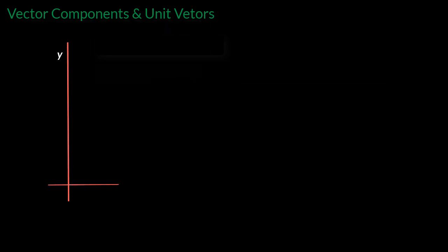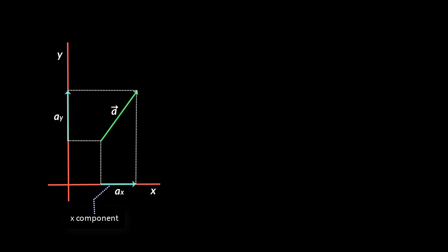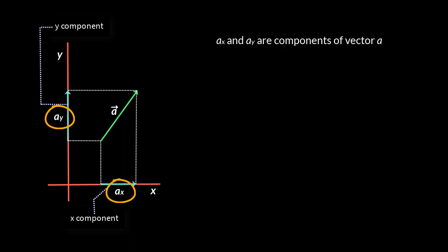When you put a vector in the coordinate system, we can say that the vector has two components. One is the shadow of the vector on the x-axis, and the other is its shadow on the y-axis. In more technical terms, the projection of the vector on the x-axis is the x-component, and the projection on the y-axis is the y-component. As of now, these are scalar values only — these are not vectors.